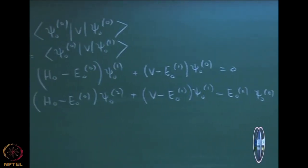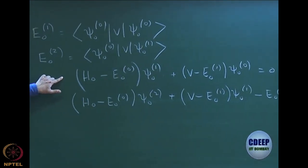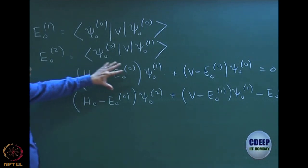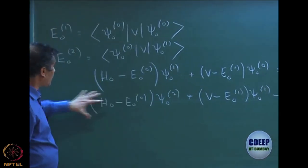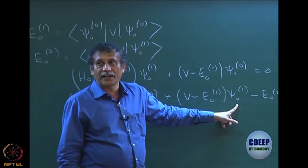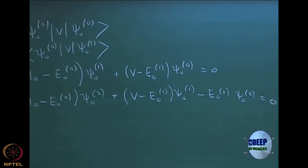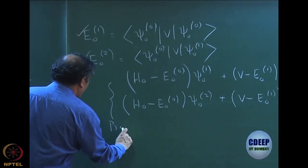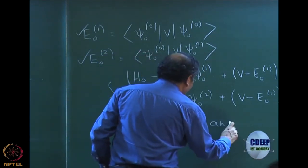These are the two equations we wrote last time. We told you that if I project each equation with ψ00 star and integrate, then from the first equation I get E01, and from the second equation I will get E02, because this term becomes zero. You directly get E01 equal to ψ00 V ψ00. Similarly, for E02, the ψ00 V ψ01 term survives and E01 times ψ00 ψ01 equals zero due to intermediate normalization, giving E02.